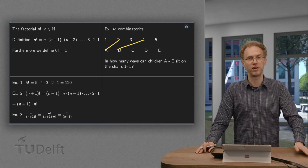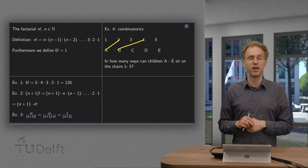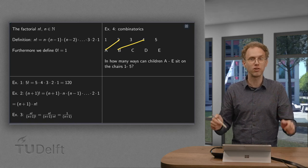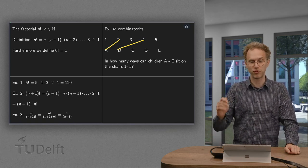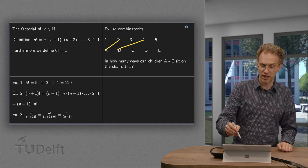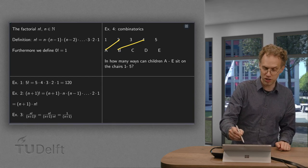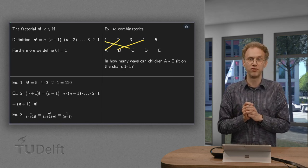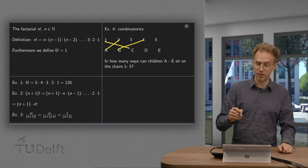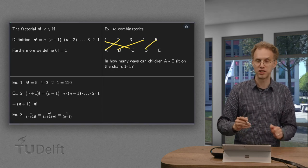Or Anna could have chosen the first one. So Anna had 5 choices, and then for Bart there were 4 left. So the total number of configurations would be 5 times 4. Now you see how this continues. Chris has only 3 choices left. So the total number of configurations which we could have obtained would be 5 times 4 times 3 times 2 times 1.